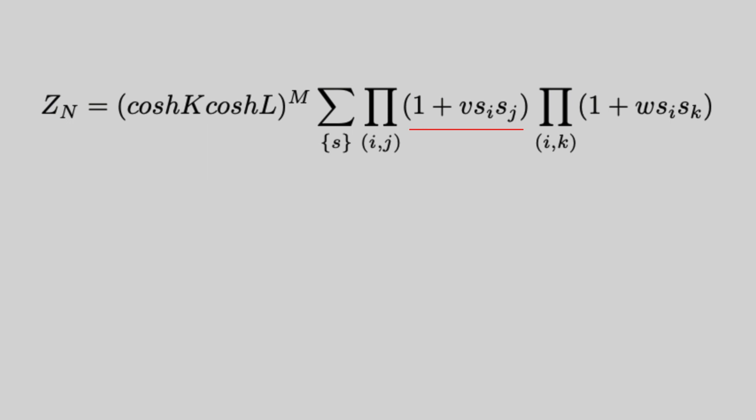Each line will contribute a one plus V Si Sj to the overall expansion. Now, when we multiply out everything, each term for each line will either get the one or we'll get a plus or minus V. What we do is, if it's the latter, we'll draw a line between the two sites. Then the generic expression for each of these terms is this.